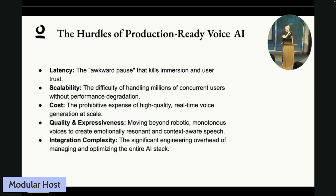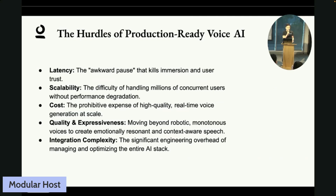But bringing this technology to millions of users is incredibly challenging. There are five major hurdles we need to overcome. First is latency — the awkward pause that can kill emotion and user trust. Second is scalability — handling millions of concurrent users without quality or performance degradation. Third is cost — creating high-quality real-time voice generation is very compute-intensive, especially for consumer applications at scale. Fourth is quality — traditional TTS models are usually very robotic, and moving beyond robotic to create emotionally resonant speech is a huge technical challenge. Fifth is integration complexity — managing and optimizing the entire AI stack requires massive engineering effort.